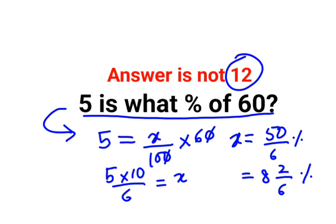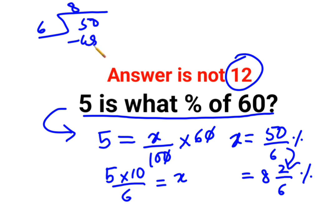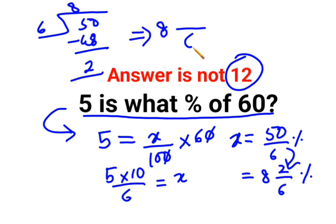Now how did I get this? We had 50 divided by 6. 6 eights are 48. When you take 48 away from 50 you get 2. So when you want to write it in its fraction form, 8 becomes the integer, 6 remains the denominator, and 2 becomes your numerator.